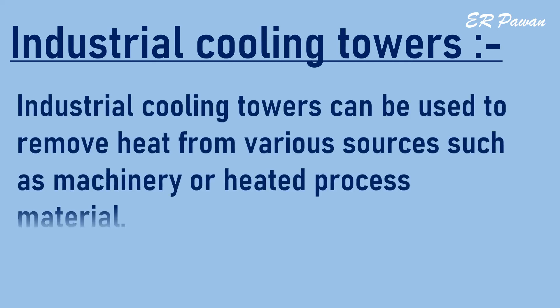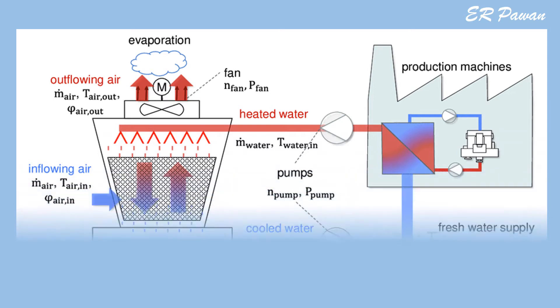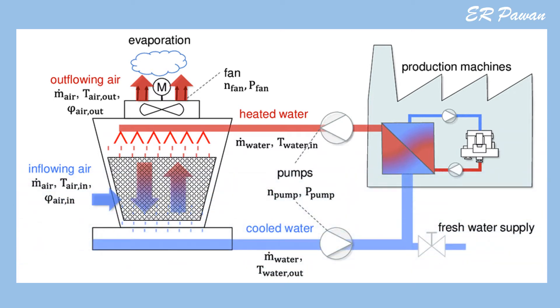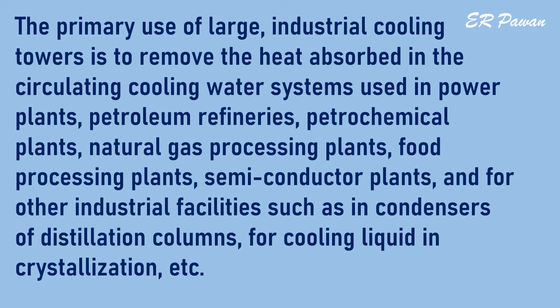Industrial cooling towers can be used to remove heat from various sources such as machinery or heated process material. The primary use of large industrial cooling towers is to remove the heat absorbed in the circulating cooling water systems used in power plants, petroleum refineries, petrochemical plants, natural gas processing plants, food processing plants, semiconductor plants, and other industrial facilities such as condensers of distillation columns, and for cooling liquid in crystallization.